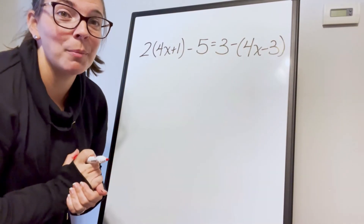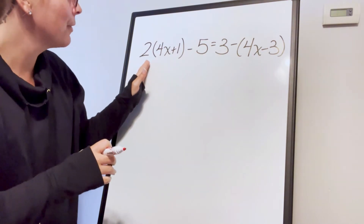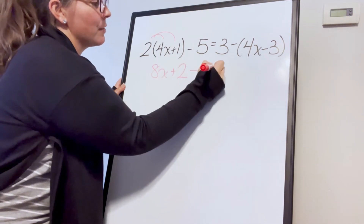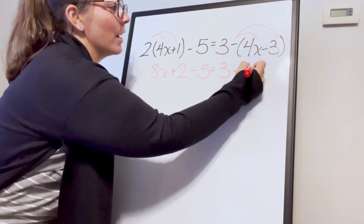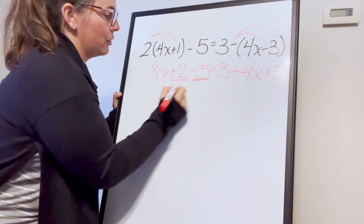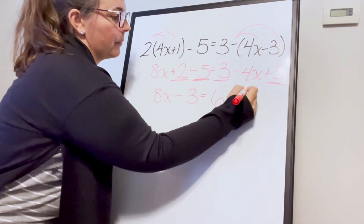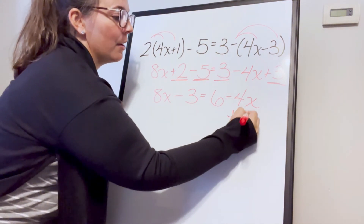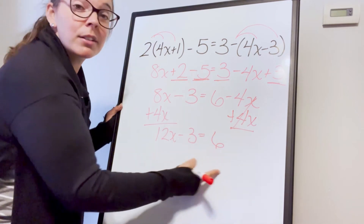Here's a multi-step equation requiring distribution and combining like terms. Starting on the left: 2 times 4x is 8x, 2 times 1 is plus 2, minus 5. On the right, distribute the negative sign to get minus 4x plus 3. Combining like terms: 2 and negative 5 gives negative 3 on the left; 3 and 3 gives 6 on the right. Then add 4x to both sides so all variables are together, giving 12x minus 3 equals 6.